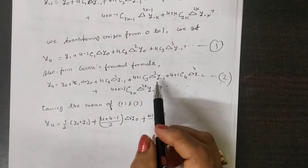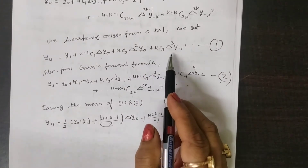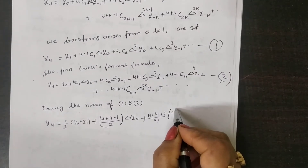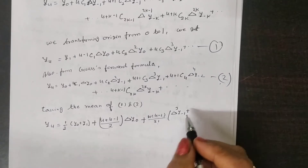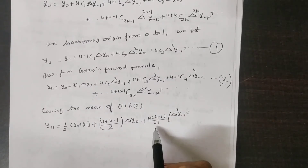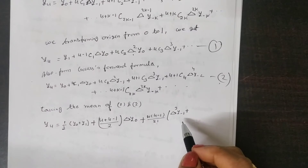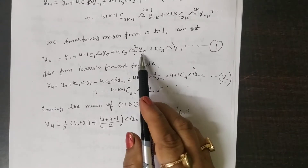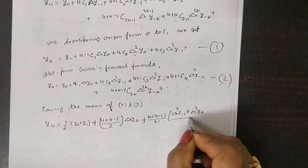The next term involves u·C3. Then this becomes delta³, and for u·C2, delta²; both delta square terms give us u·(u-1) / factorial(2), multiplied by [delta²·y(-1) + delta²·y(0)] divided by 2. Is that clear?